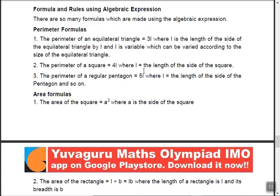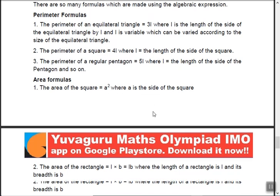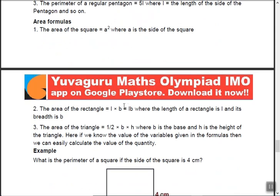Formulas for perimeter and area: perimeter of an equilateral triangle is 3 times side; perimeter of a square is 4 times side; perimeter of a regular pentagon is 5 times side. Area of a square is side squared; area of a rectangle is length times breadth; area of a triangle is half times base times height. These have been covered in respective chapters.